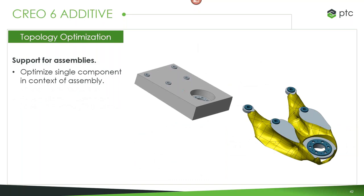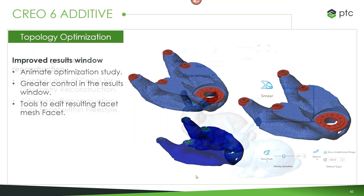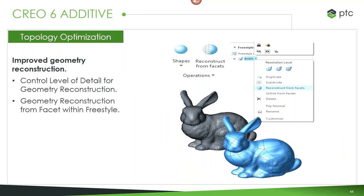In the world of topology optimization, it now works on assemblies — you can optimize a single component in the context of your entire assembly, using individual parts as references for other parts within the same assembly. There are also improved results from topology optimization: better animation for studies, greater control over results, and more tools to edit the resulting geometry. Previously geometry had to be constructed as a basic freestyle object; now you can choose the resolution level and reconstruct it from facets.